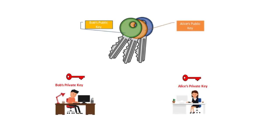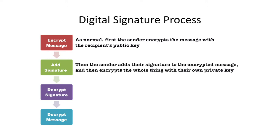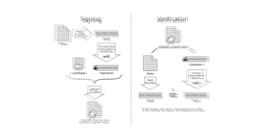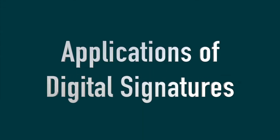Everyone using public key cryptography has two keys — one private and one public — either of which can decrypt a message encrypted with the other. To encrypt a message with a digital signature, the sender first encrypts the message with the recipient's public key, then adds their signature to the encrypted message — for example, text like 'this message is from John Smith' — and then encrypts the whole thing with their own private key. The recipient receives the message and decrypts it with the sender's public key, which produces the digital signature and the encrypted message. The recipient then decrypts the remaining message with their own private key. If this unwrapping procedure works, revealing a legible digital signature and a legible message, the recipient can be sure the message was sent by the sender since only they possess the private keys used to encrypt the entire message.